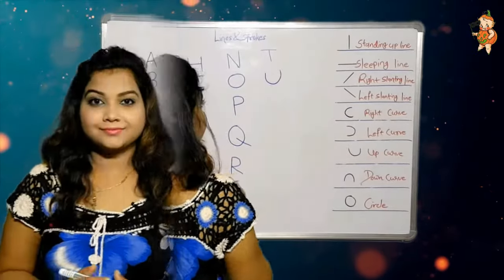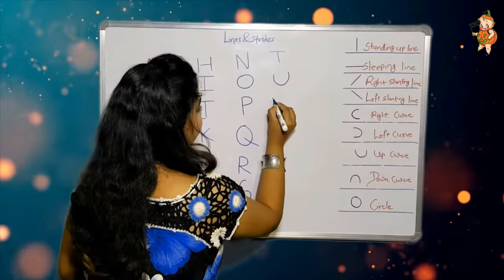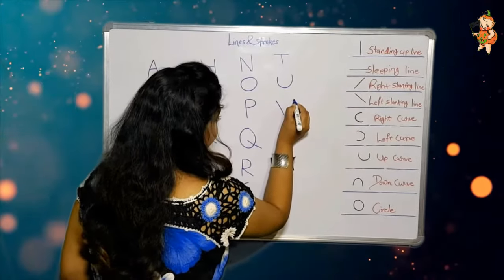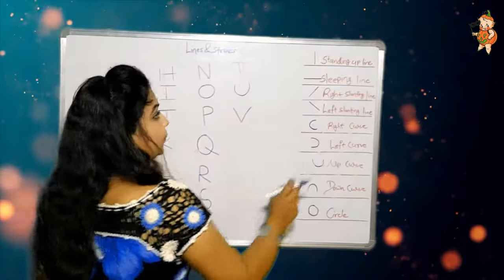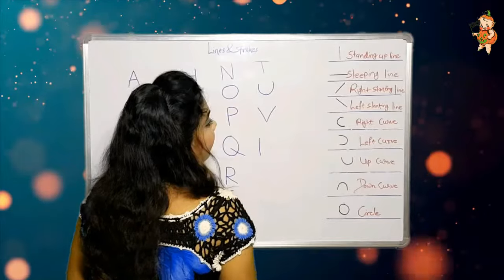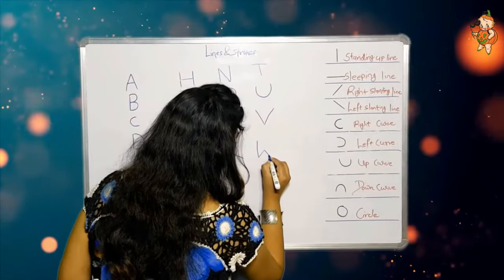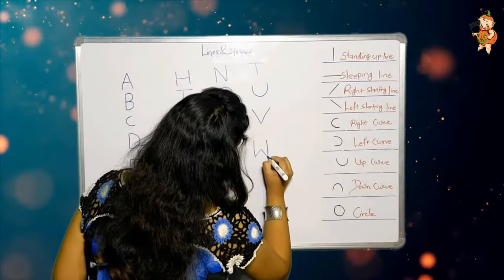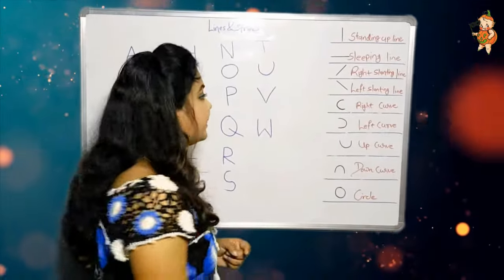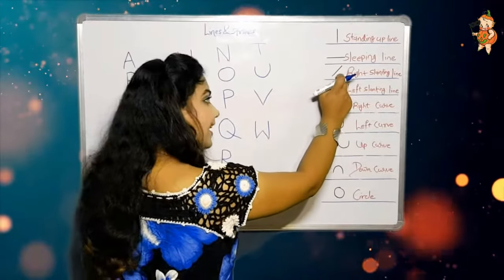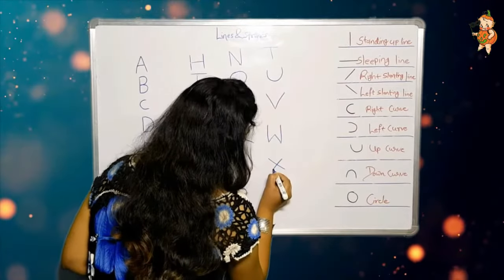Now it's time to make V — one left slanting line and one right slanting line, it's V. Now it's time to make W — one standing up line, one right slanting line, one left slanting line, and another standing up line. Now it's time to make X — it's very easy — one left slanting line and one right slanting line. Cross lines make X.